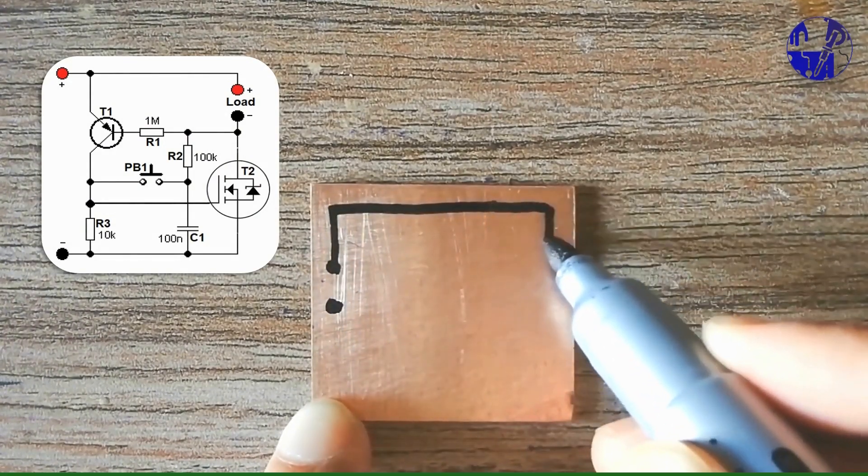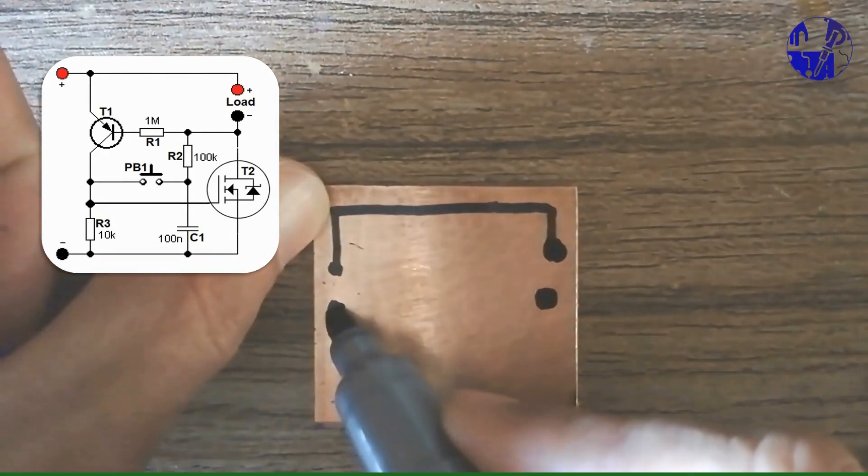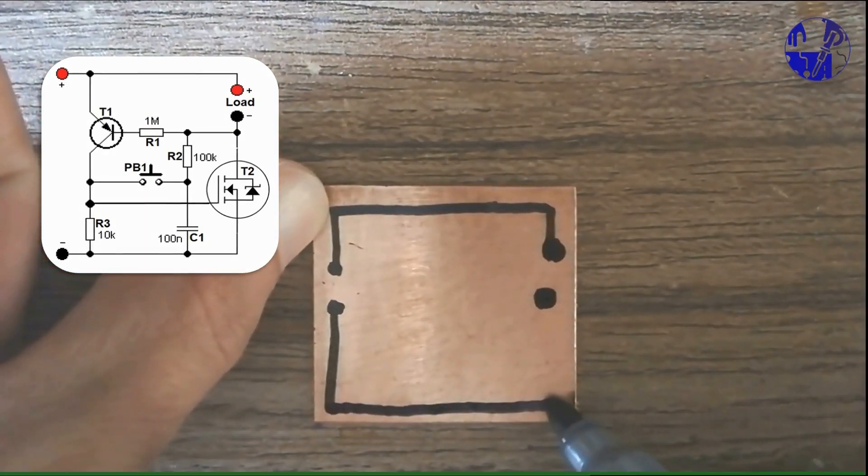In the description section, you will discover a link where you can find both the PCB image and circuit diagram. Follow the circuit diagram carefully and draw the circuit on the copper sheet using a permanent marker.